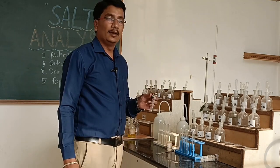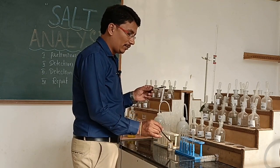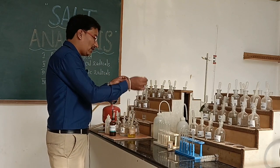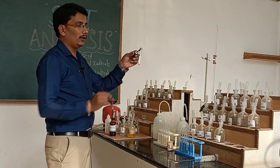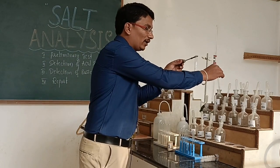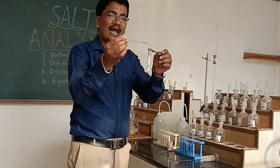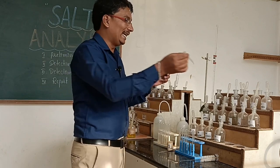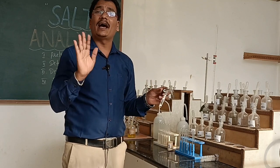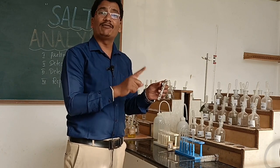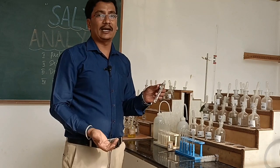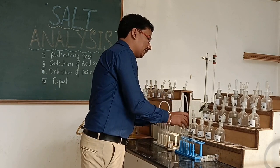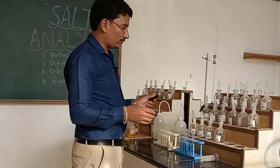Moving on to the second group test: salt in a dry test tube plus concentrated H2SO4. If we add concentrated H2SO4 and observe a colorless, odorless gas that gives dense white fumes with a glass rod dipped in ammonium hydroxide, then it indicates the presence of chloride ion in the given salt. We then have to conduct a confirmation test for chloride ion.